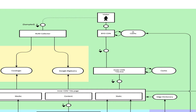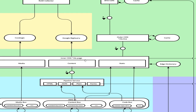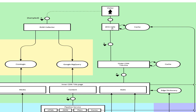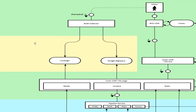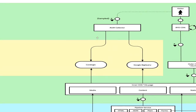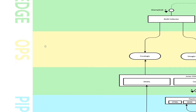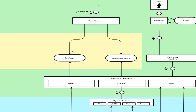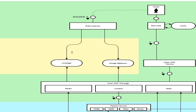Once we make the content live — hlx.live pages — the outer CDN comes in. In our case the outer CDN is Fastly, and caching is applied here. On top of that, businesses can bring their own CDN for a second level of caching. So: inner CDN has no caching, outer CDN has caching, and an optional customer-owned CDN adds another caching layer.